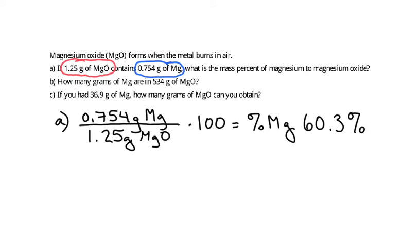That means any sample of magnesium oxide, no matter where you collect it from, no matter how big it is, will always have 60.3% magnesium in it. So we can use that percent in the next one in letter B.